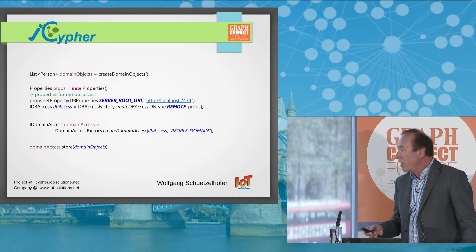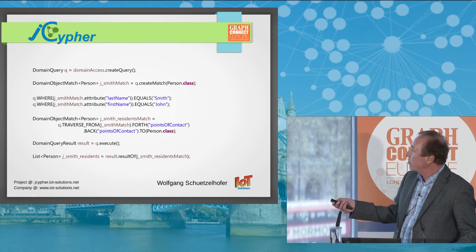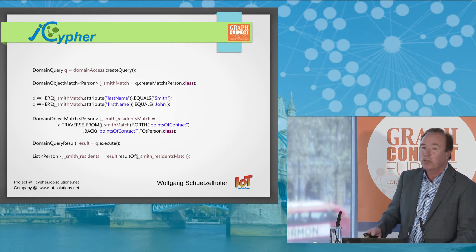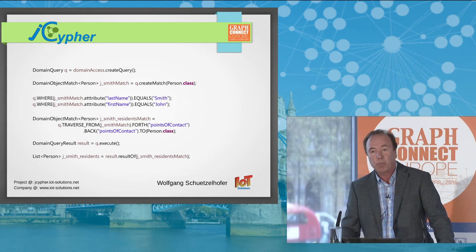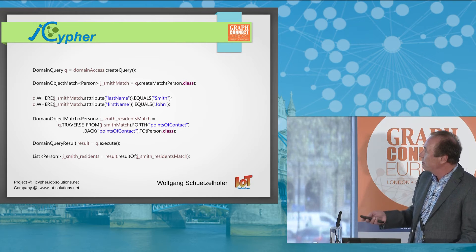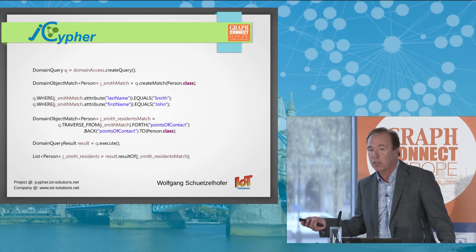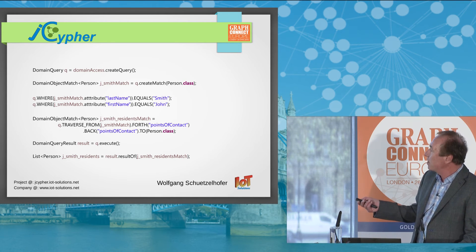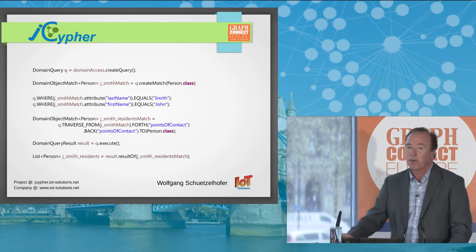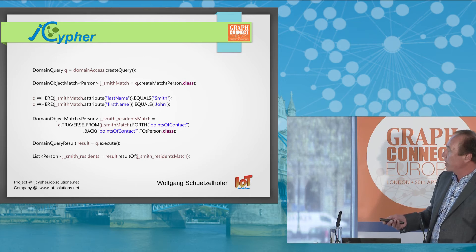Next we want to formulate and execute a domain query. From the domain access, we create first a query object. Next we create one or more domain object matches — a domain object match plays a central role in domain queries; it serves to match objects of a certain type. In our case, we match objects of type person. Next we specify some constraints using where clauses: the person should have a last name of Smith and a first name of John. Consecutive where clauses are ANDed by default.